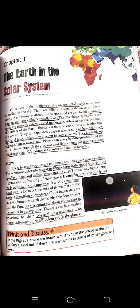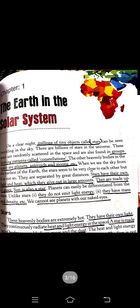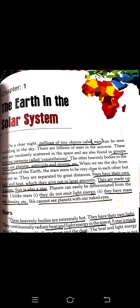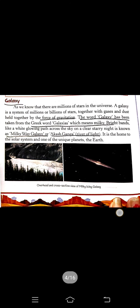So let us start today's class with a quick recap. In the previous classes, we have already read about the Earth and the solar system. As you know, at night you can see millions of tiny objects called stars, and the group of stars forming a pattern is called a constellation. We have already covered constellations, and you have already read about the planets. In the last class, we also read about galaxies.